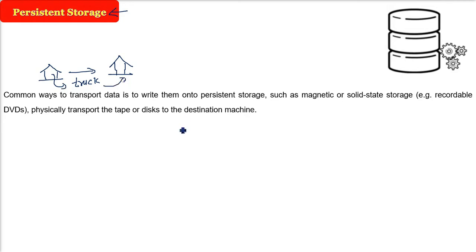In the context of communication, the persistent storage, the common ways to transport data is to write them on persistent storage like magnetic or solid-state storage. That can be DVDs, it can be magnetic tapes, and we are physically transferring the data on the tape and disks to the destination machine.